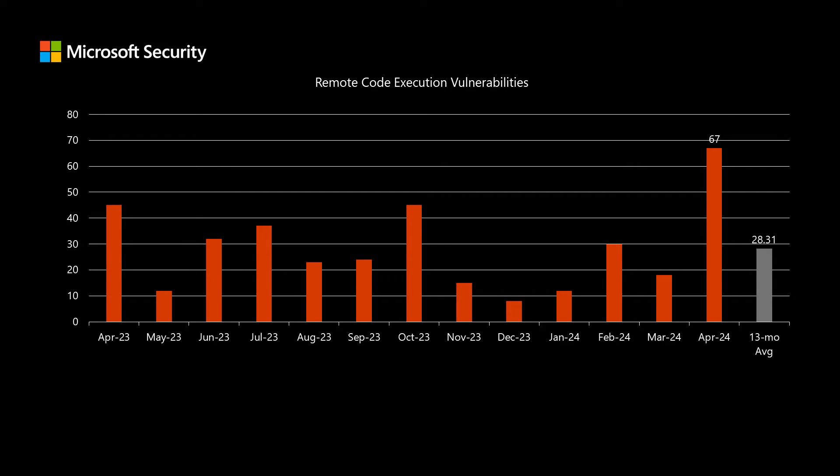I'll talk to remote code execution vulnerabilities. These are the types of vulnerabilities that typically provide the most risk to your systems — they would allow a threat actor to install their own software or other high-level actions. This month, we have a total of 67 remote code execution vulnerabilities. We've been averaging right around 28, so twice as much as we normally see. Remote code execution vulnerabilities provide a certain amount of risk, and this is a better data point for assessing release risk than just the total count.